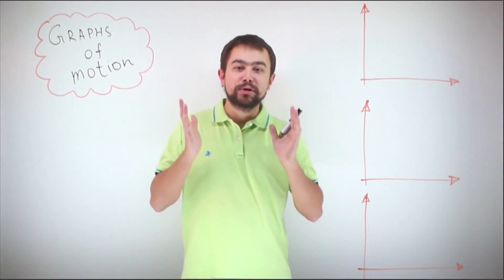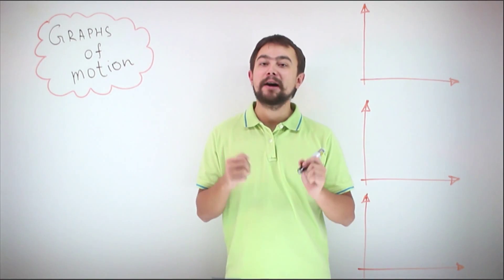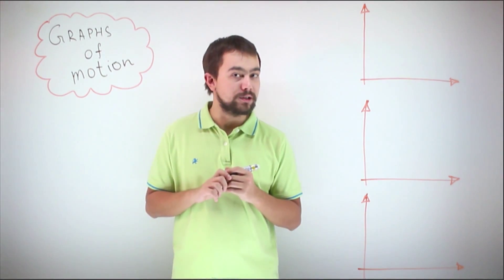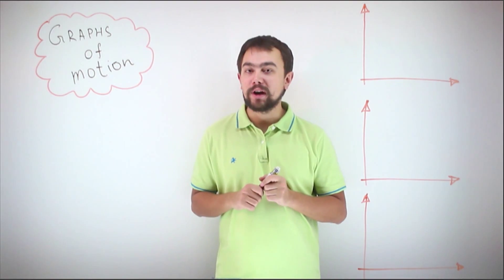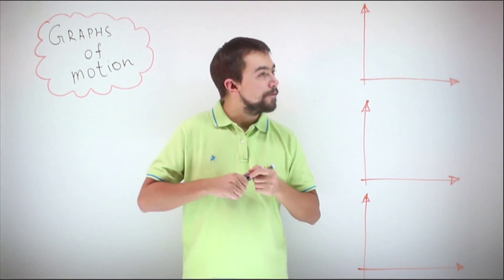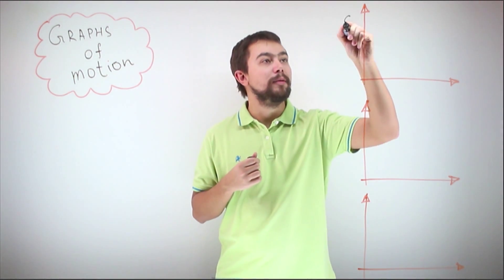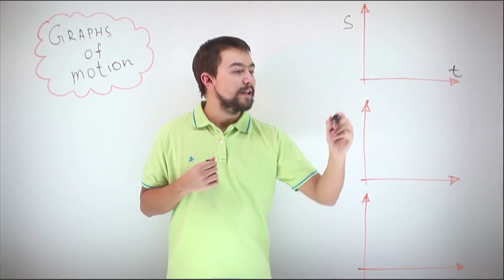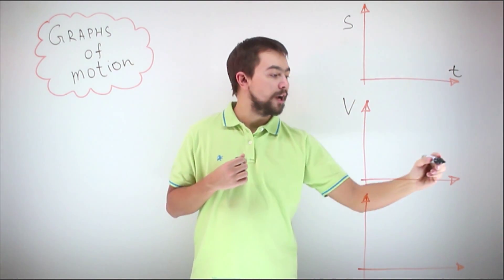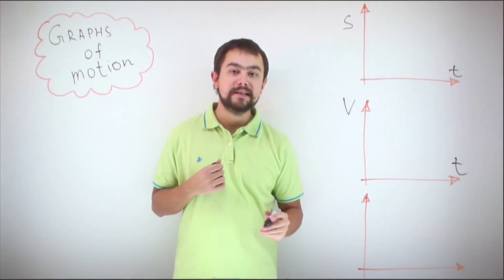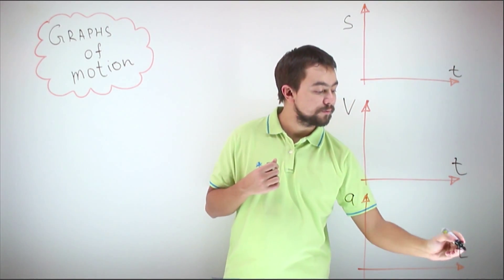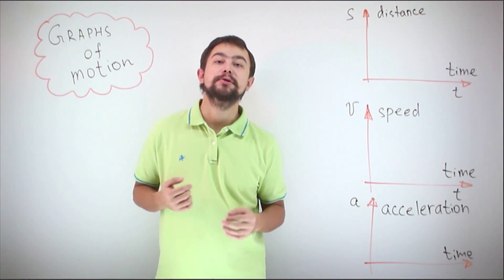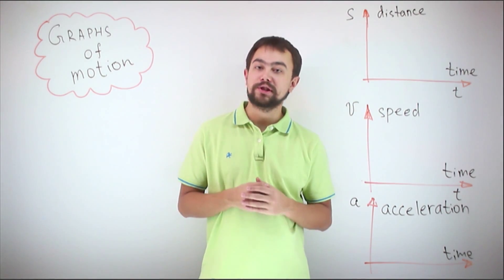Hello, my name is Vlad and today I'm going to tell you about how to describe motion using graphs of motion. It is very important to know how to read and how to draw graphs of motion. There are three main types: the distance-time graph, the speed-time graph, and the acceleration-time graph.